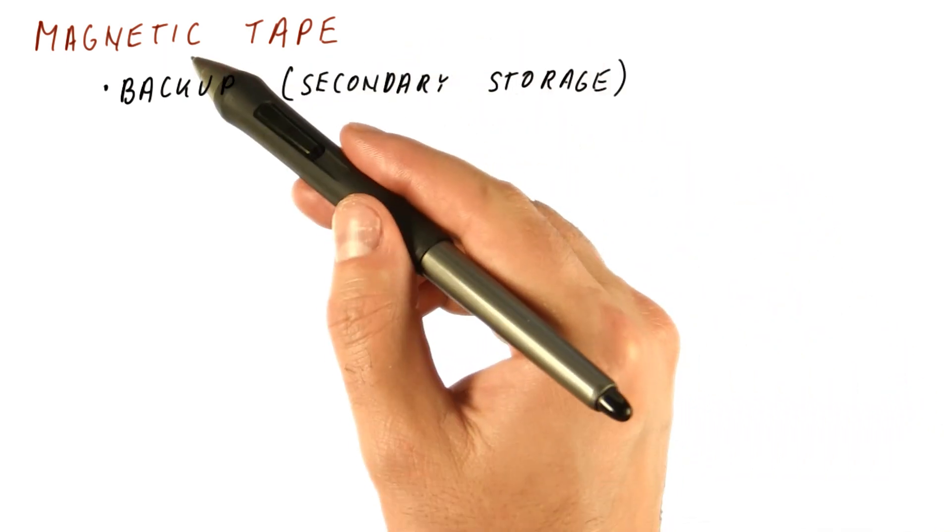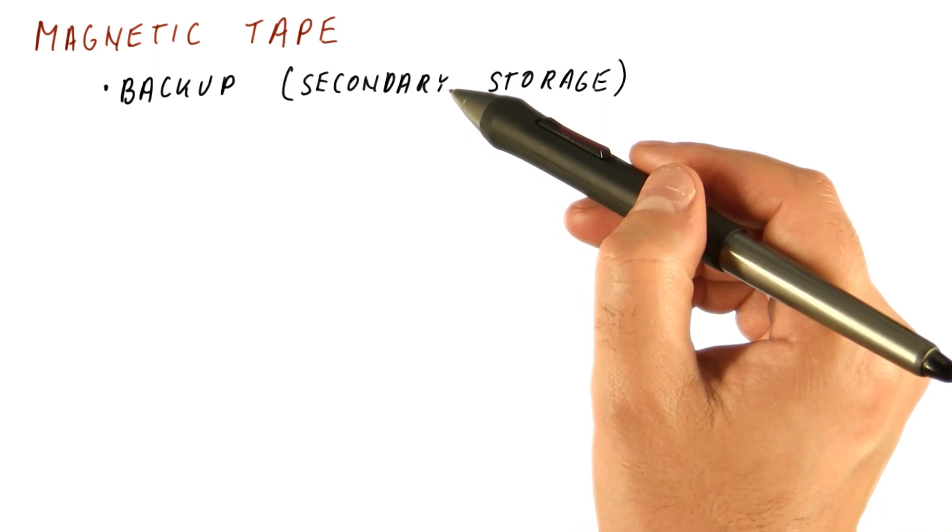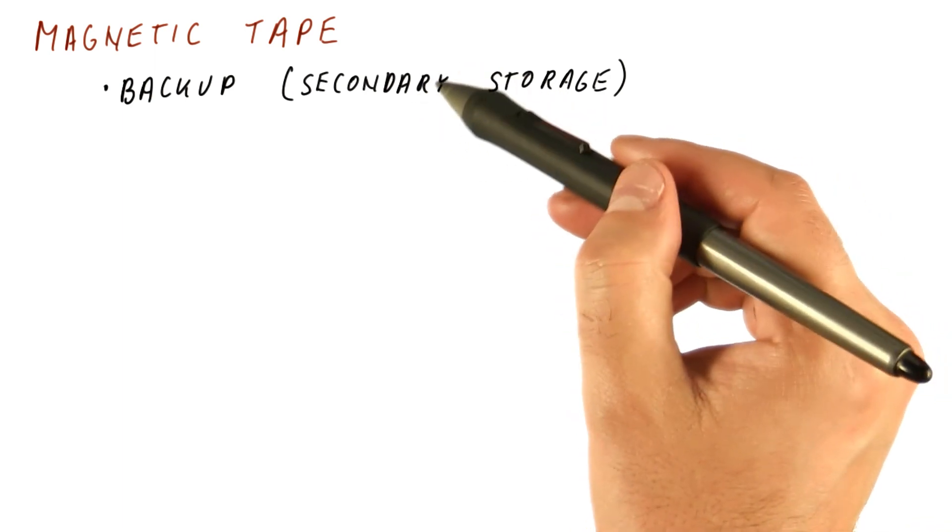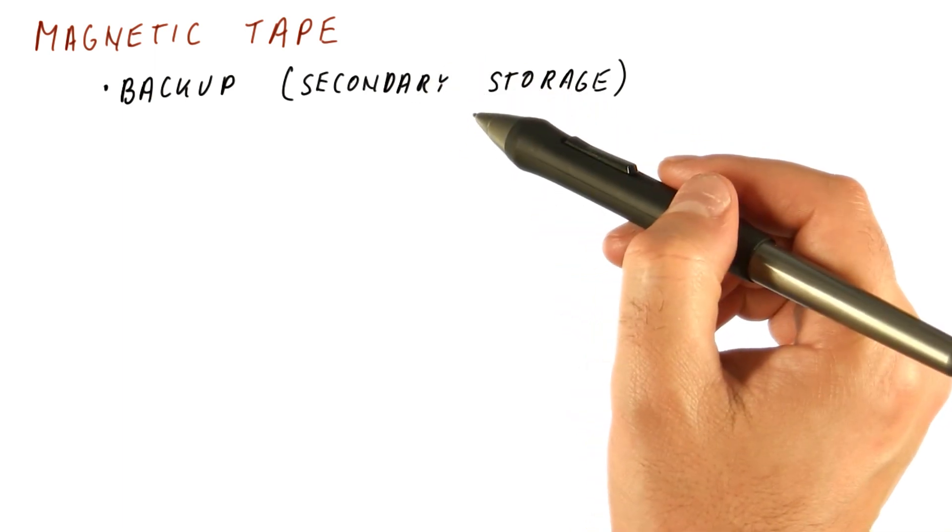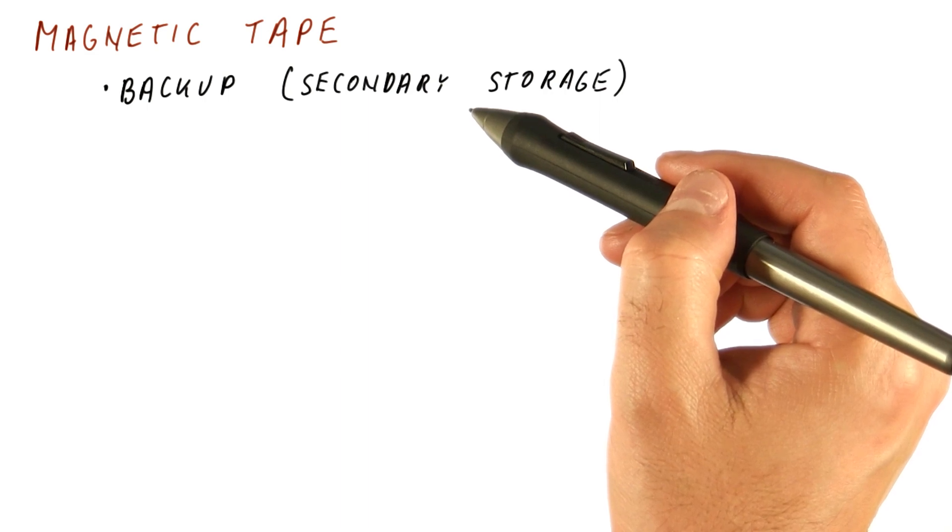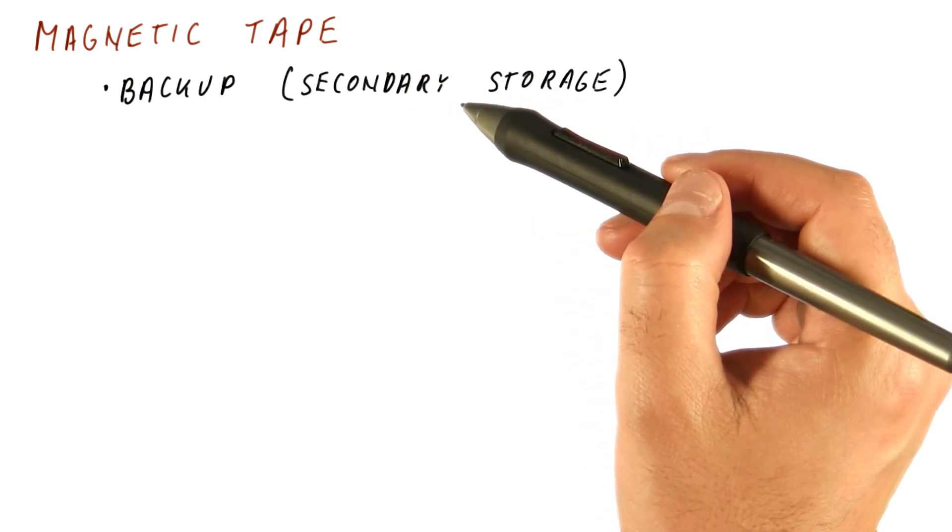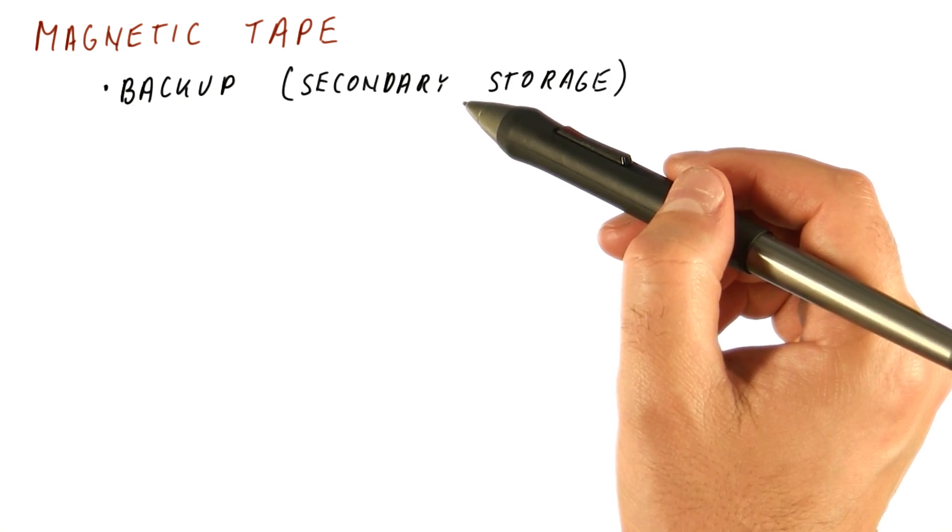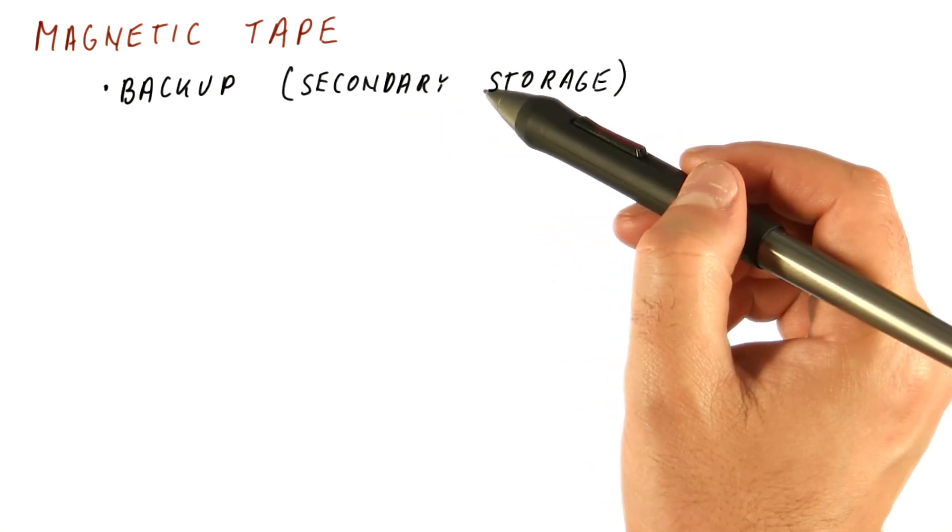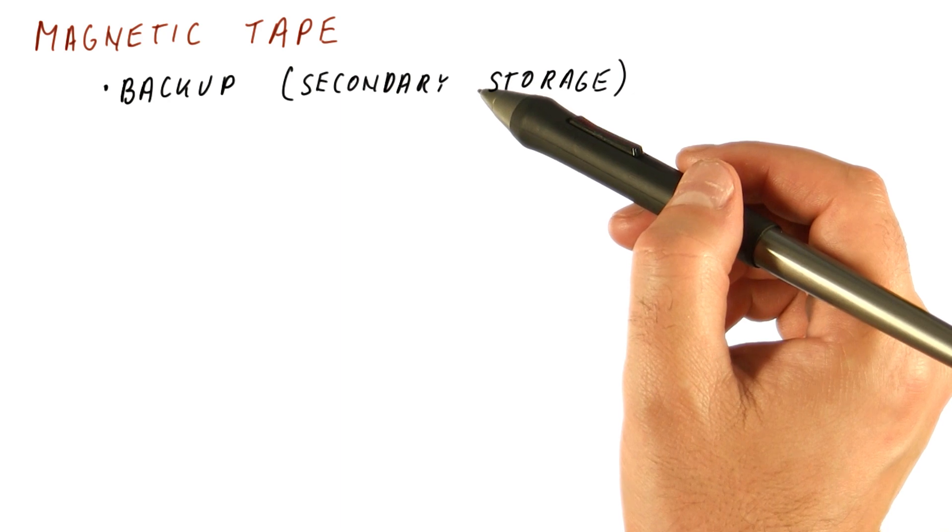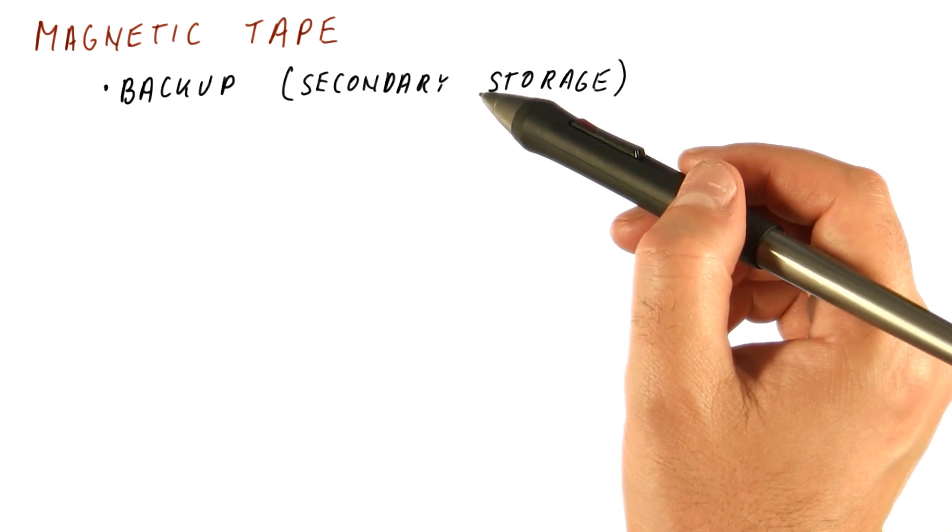This means that the magnetic tape is not the first device on which you look for your data. You first try to find your data on the hard drive, and only if it's not there, you go to secondary storage, either because the hard drive was lost and you need to restore a backup, or because this data was not used for a long time, so it was stored on tapes and put away somewhere.